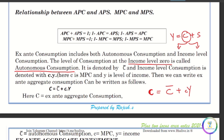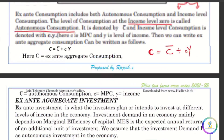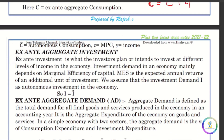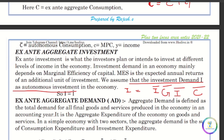Aggregate consumption means the consumption function. We call it autonomous consumption, and we also consider aggregate investment — called planned investment. We assume that investment demand is autonomous investment. So we have C-bar and I-bar in the market, where C-bar can change.